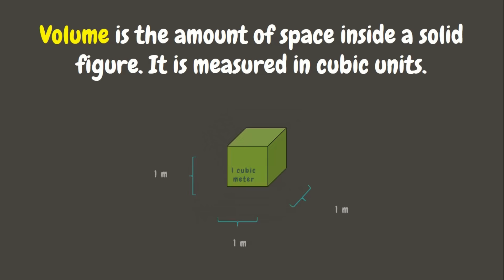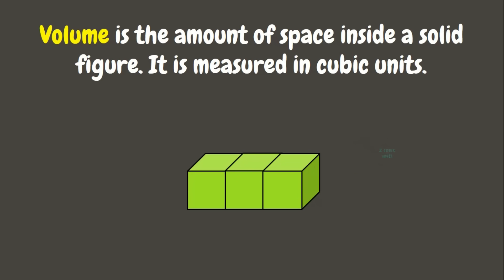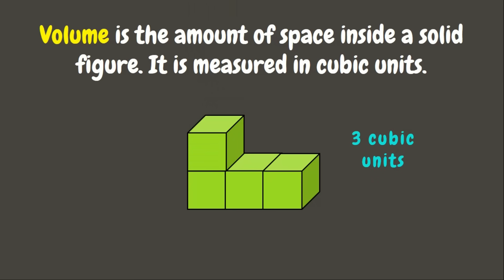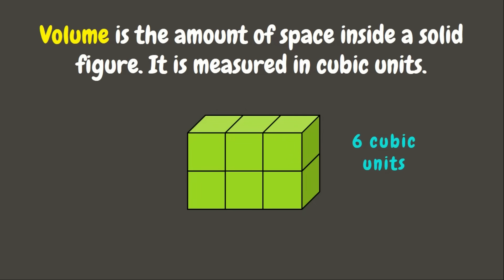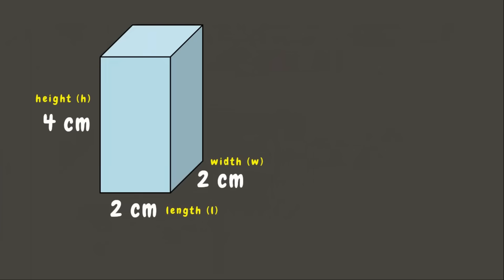Now if we have two cubes whose sides measure one unit, the volume would be two cubic units. If we add one, there will be three cubic units. And if we add three more, there will be six cubic units. Here we can see we have formed a rectangular prism whose height measures two units, length three units, and width one unit. We can determine the volume of a figure by counting the number of cubic units that can fit inside it.